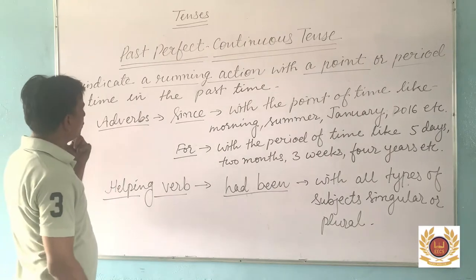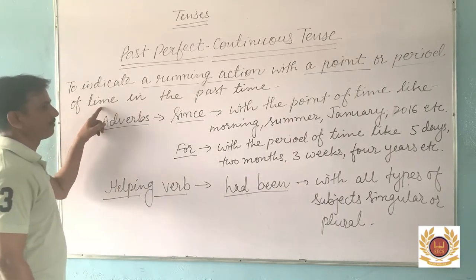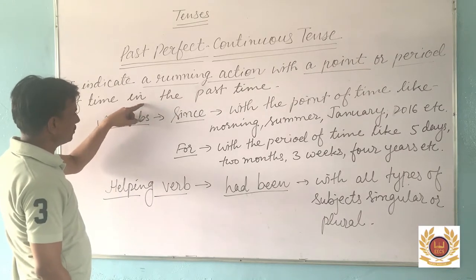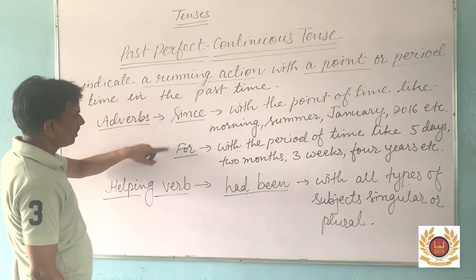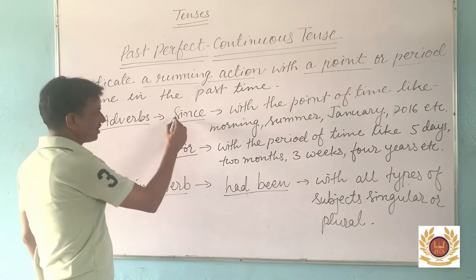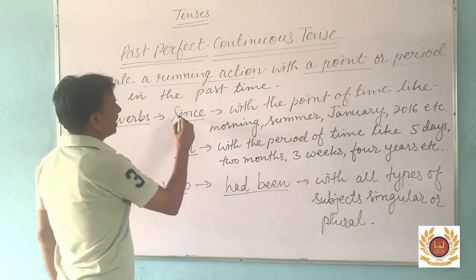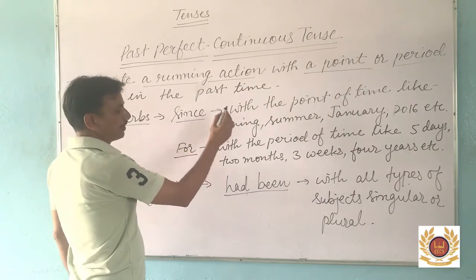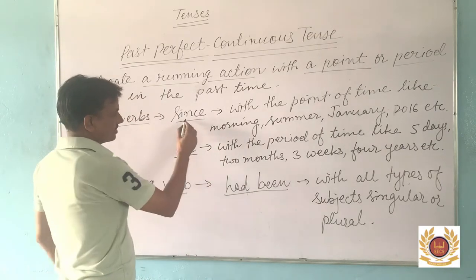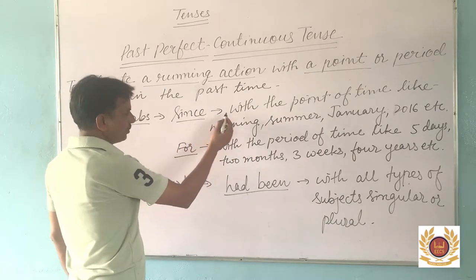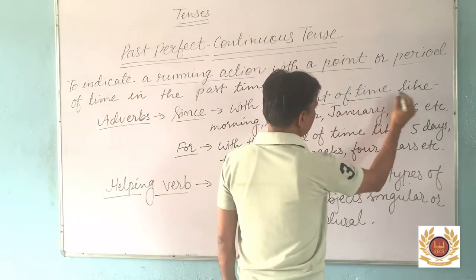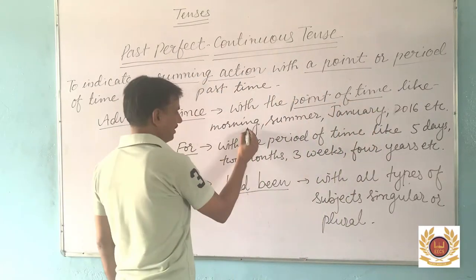To show or indicate the running action with a point of time or period of time, we use two kinds of adverbs: 'since' and 'for'. We use 'since' and 'for' in Past Perfect Continuous Tense, just like in Present Perfect Continuous Tense. 'Since' is used with a point of time.